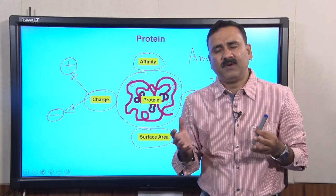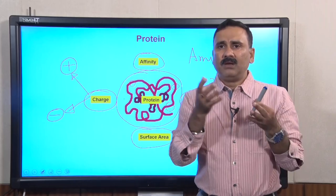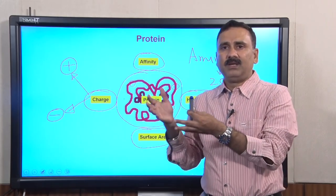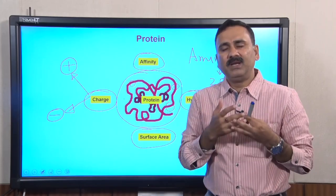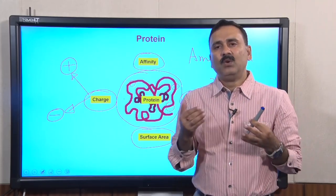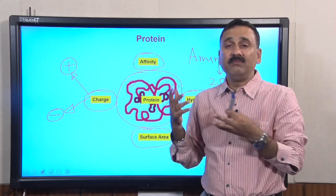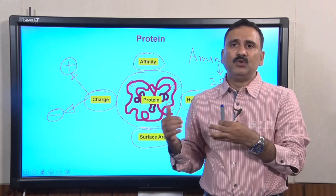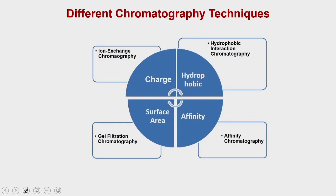This is just one example — there are many other examples where molecules may have very specific affinity for certain ligands. For example, there are many dehydrogenases which have affinity for NADH or NADPH, and in those cases you can use these ligands to purify the proteins. So according to the different properties — charge, hydrophobicity, surface area, and affinity — people have devised different types of chromatography techniques.